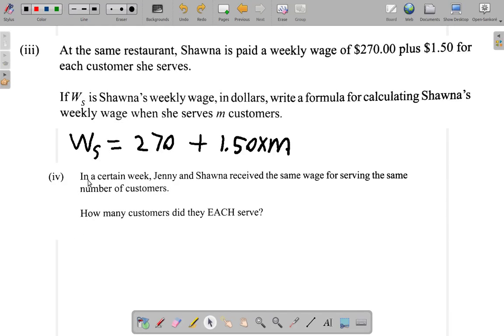Part four: In a certain week, Jenny and Shawna received the same wage for serving the same number of customers. How many customers did they each serve? Same wage, same number of customers.